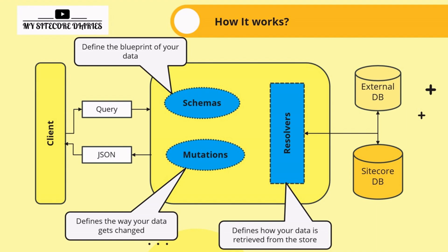Resolvers define how your data is retrieved from the store. These functions take the client query or mutation, interact with the underlying database — in Sitecore's case, the Sitecore database — and return the requested data in JSON format back to the client. To summarize: Sitecore's implementation of GraphQL allows precise querying and efficient data management. The client sends a query, a schema defines the data structure, mutations manage data changes, and resolvers fetch data from the connected database.